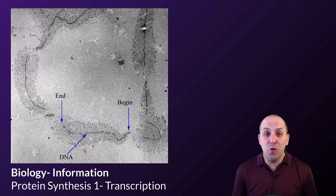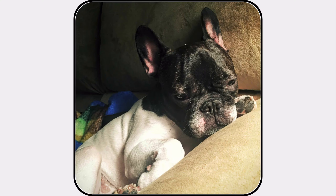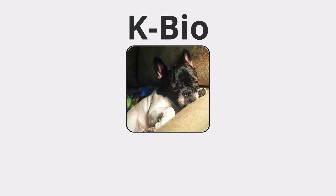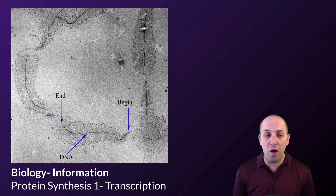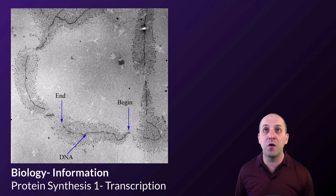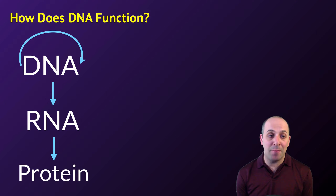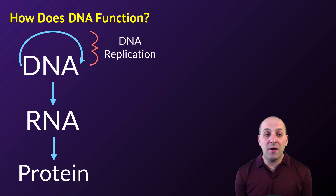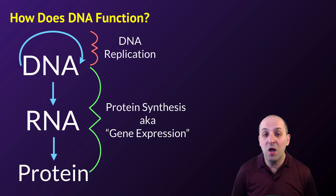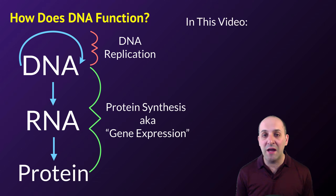Hi, welcome to our first video on protein synthesis. This video is going to look at the process of transcription, which is the first step by which the instructions in DNA are converted into the sequence information necessary to build proteins. The information in DNA can be copied — that's known as DNA replication — or it can be used to produce proteins, referred to as protein synthesis or gene expression. It's the first arrow in that process, going from DNA to RNA, that we're going to focus on in this video.